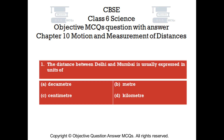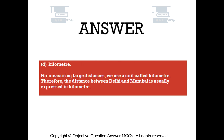Question number 1. The distance between Delhi and Mumbai is usually expressed in units of: Option A, decametre; Option B, metre; Option C, centimetre; Option D, kilometre. The right answer is Option D, kilometre. For measuring large distances, we use a unit called kilometre. Therefore, the distance between Delhi and Mumbai is usually expressed in kilometres.